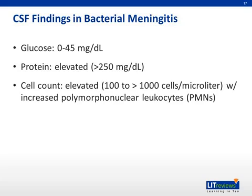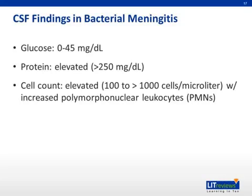The three major CSF findings to look for in bacterial meningitis are glucose, protein, and cell count. You also want to send for a gram stain. You're looking for a glucose of 0 to 45 mg/dL. Protein is often elevated, greater than 250 mg/dL. The cell count is most important — it is usually elevated with 100 to greater than 1,000 cells per microliter with an increased predominance of polymorphonuclear cells, otherwise known as PMNs or neutrophils. A neutrophilic predominance in the CSF is very concerning for bacterial meningitis. Don't forget the gram stain, as it will be very helpful in tailoring your antibiotics.